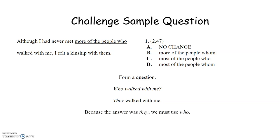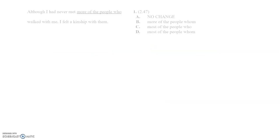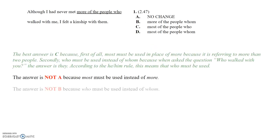So now, same thing, we can get it down to two answer choices, choices A and C, and now it's a matter of, do we want to say, although I had never met more of the people who walked with me, or although I had never met most of the people who walked with me. In this case, most is going to be correct. Here are some further explanations if you need them. Because more is incorrect and whom is incorrect, the only one that has a matching correct answer choice is C, most of the people who.